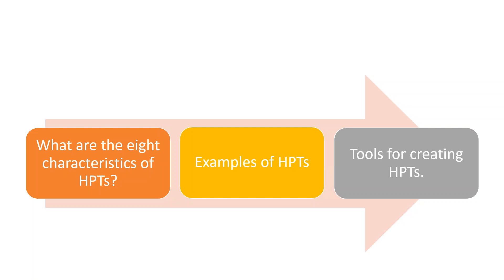Let's work out what the eight are. We'll look at some examples of high-performing teams in the world of sport and consider what some of their characteristics are. Then, because this is a very practical program, we'll look at tools for creating high-performing teams — things you may like to implement between now and the next time we meet. Those are the three key things we're looking at today.